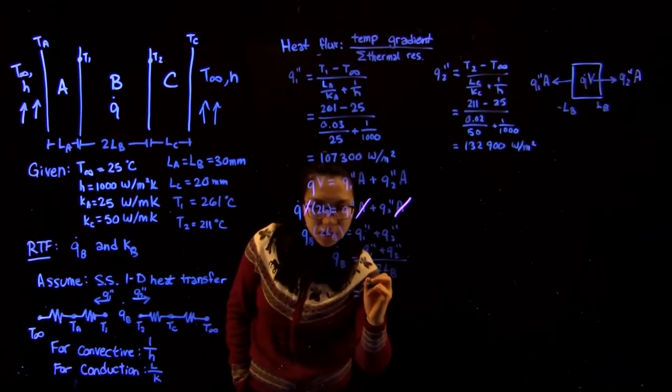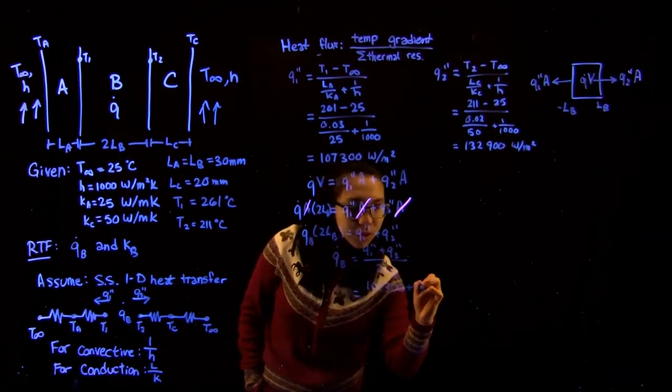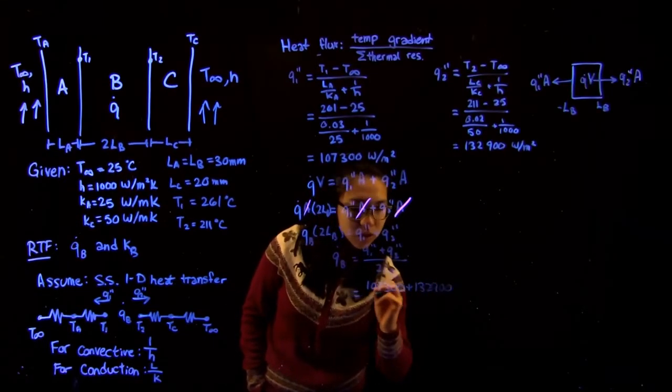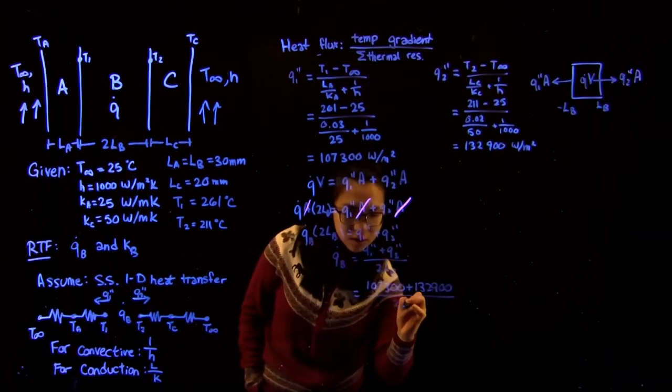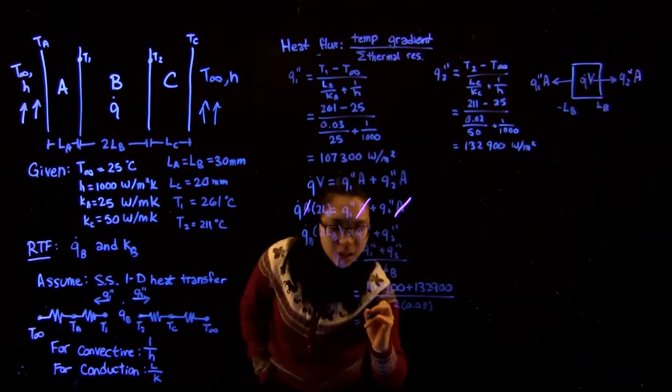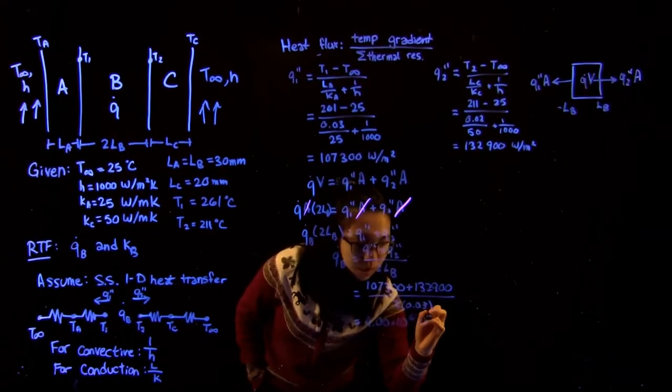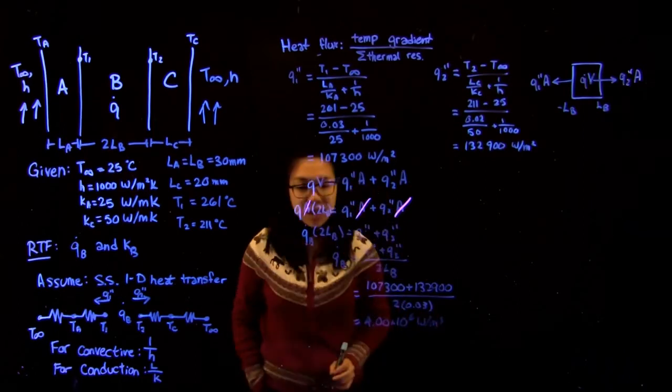Substituting in these values, this is 107,300 plus 132,900 over 2 times 0.03, gives us a heat generation of 4 times 10 to the 6 watts per meter cubed.